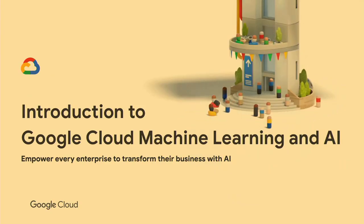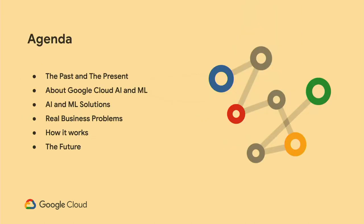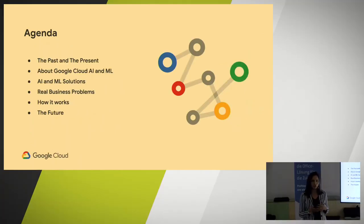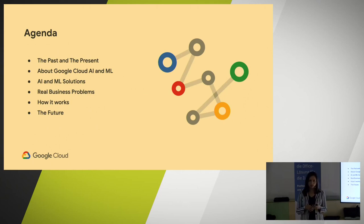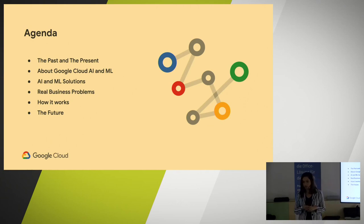I'm going to be speaking about machine learning, AI, and how we are helping enterprises to transform their businesses, their products, and helping them with tough problems. To pace it through for the next half an hour or so, I'm going to run through this agenda: starting with a bit on past and present, followed by a general introduction on AI and ML, what we're specifically doing in Google AI and ML, some real business problems we are solving, and in the end a bit on the future, which is of course open-ended.